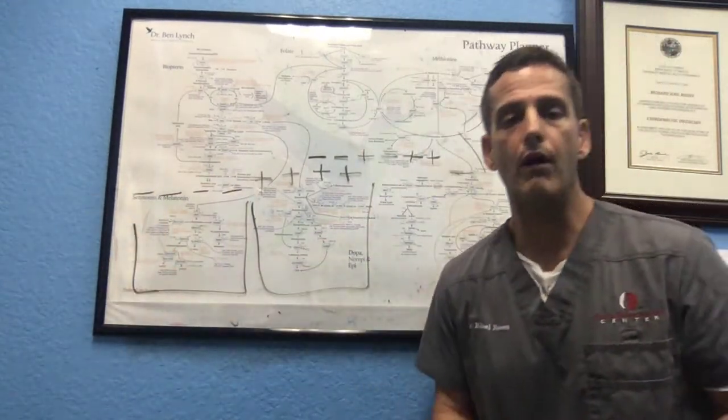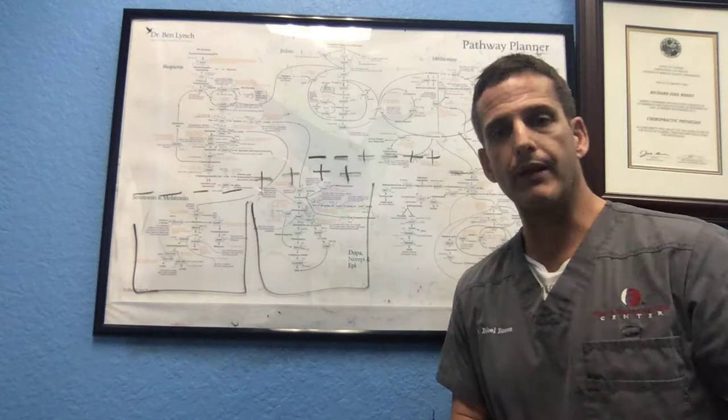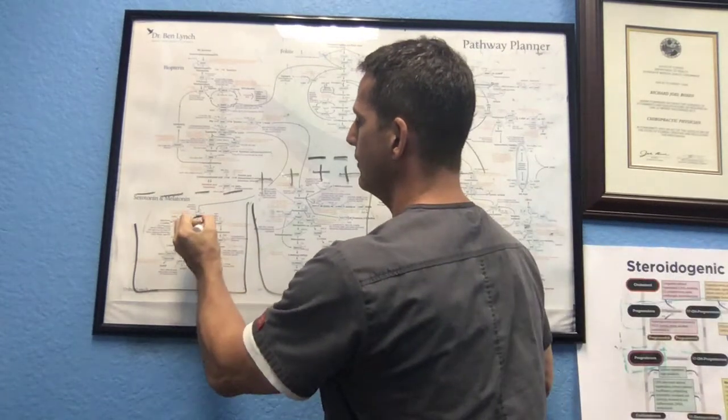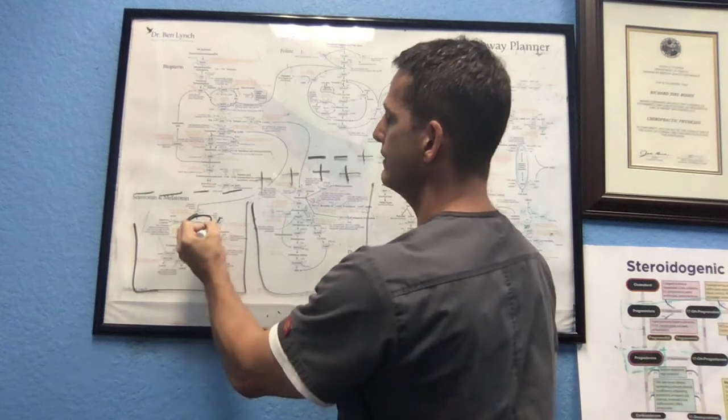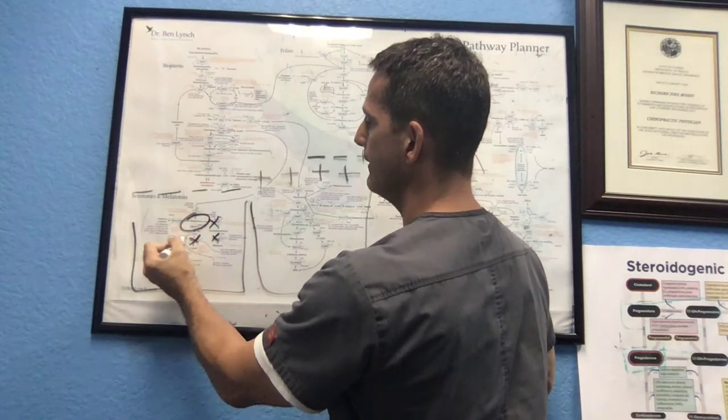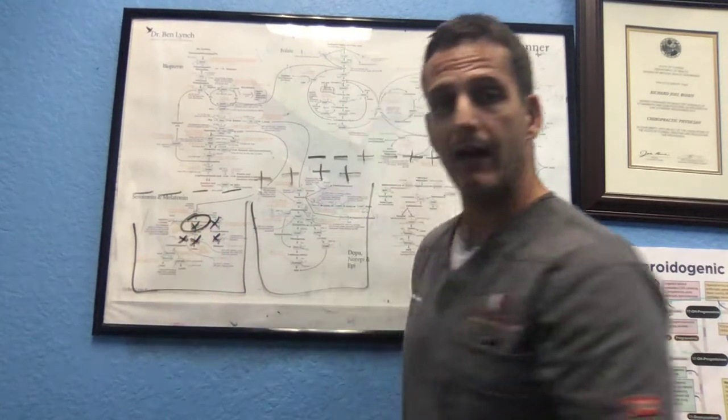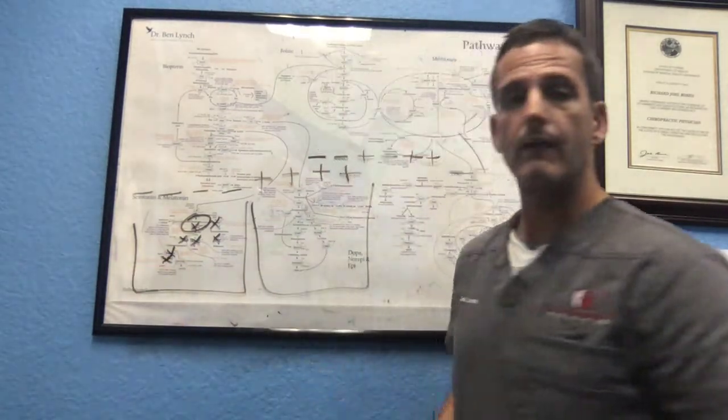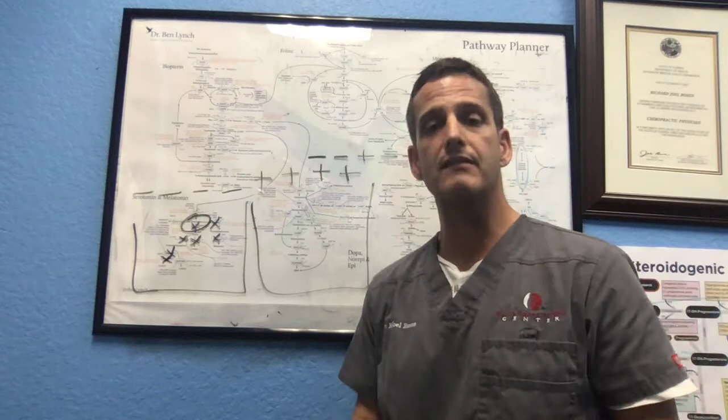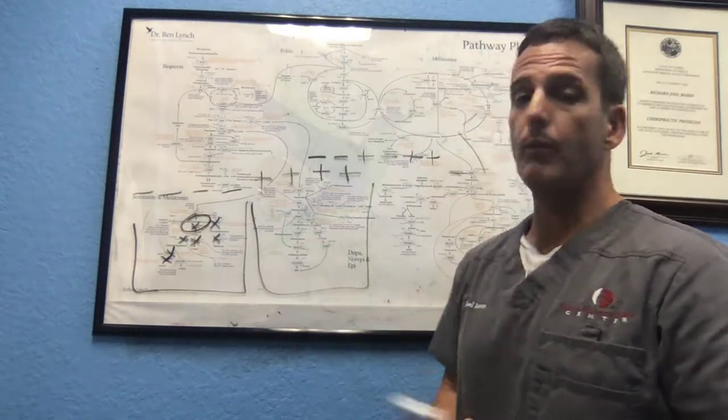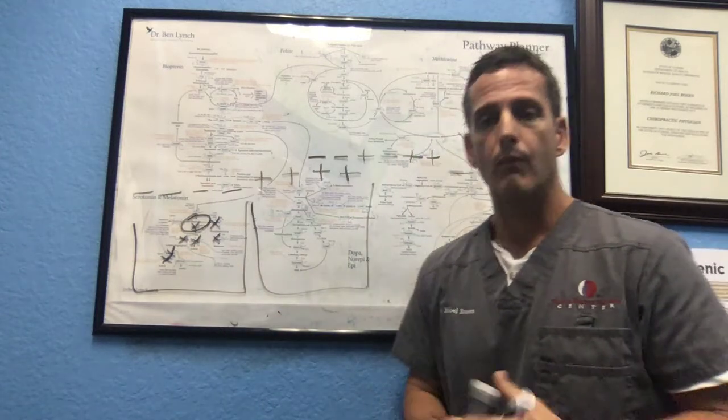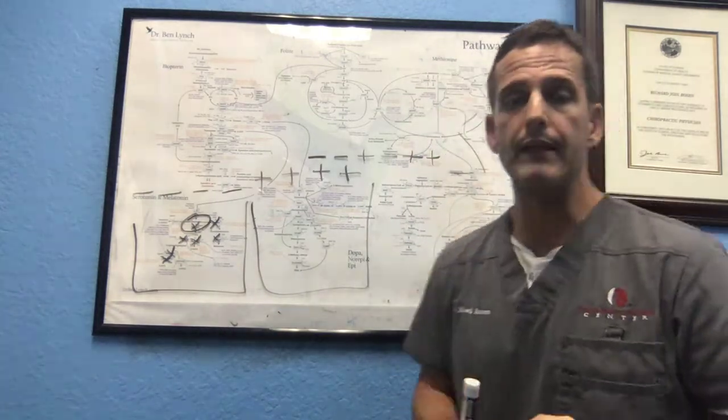So now if you go on a selective serotonin reuptake inhibitor, something like Prozac, what that's going to do is try to shut down the enzymes, especially MAO-A or SERT-1A, to slow down the clearance of serotonin so it lasts longer. They do have dopamine reuptake inhibitors, but typically for depression, we go on serotonin reuptake inhibitors.